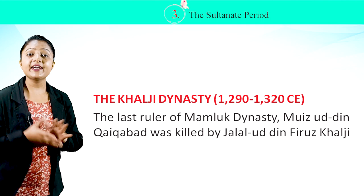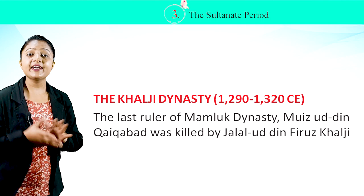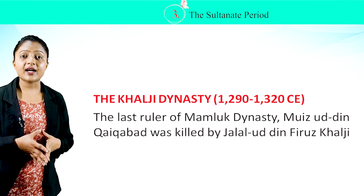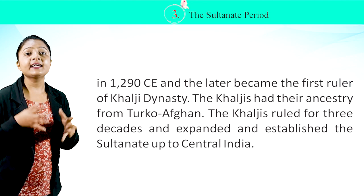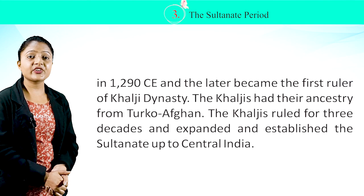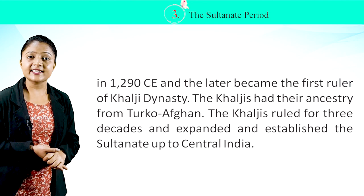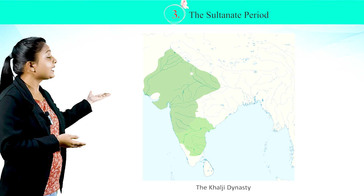The Khalji Dynasty, 1290–1320 CE. The last ruler of the Mamluk Dynasty, Muizuddin Kaikabad, was killed by Jalaluddin Firuz Khalji in 1290 CE, who became the first ruler of the Khalji Dynasty. The Khaljis had their ancestry from Turko-Afghan origins. They ruled for three decades and expanded the Sultanate up to Central India. In this map, you can see the extent of the Khalji Dynasty.